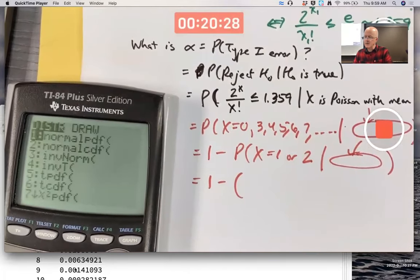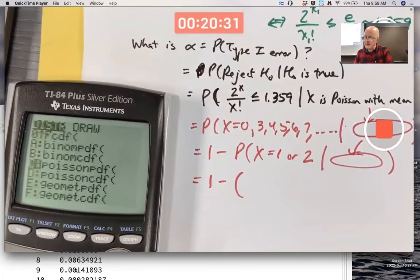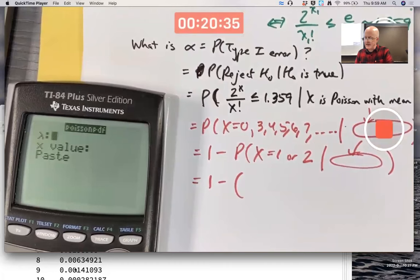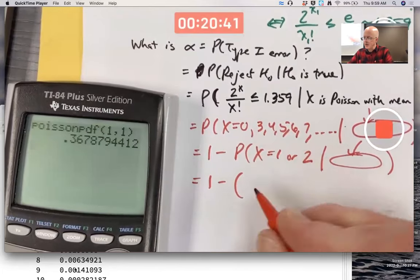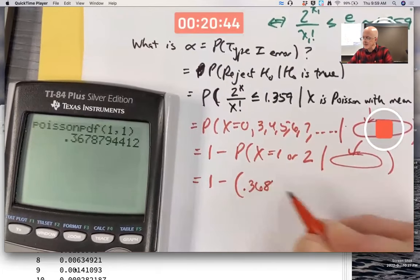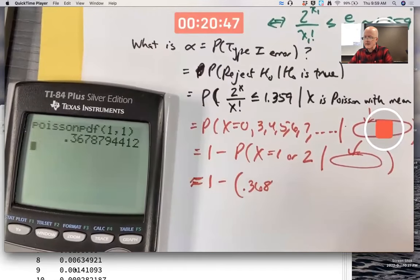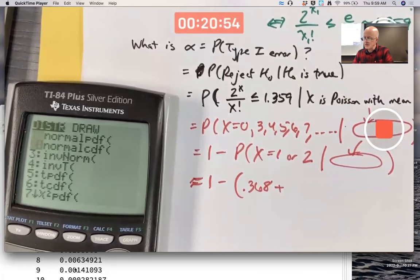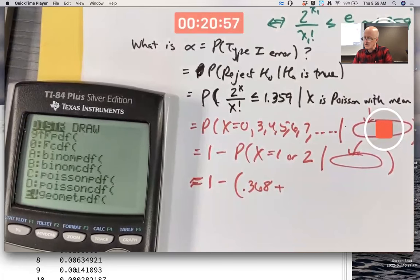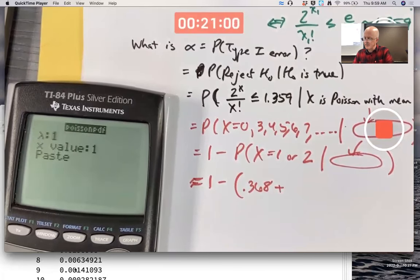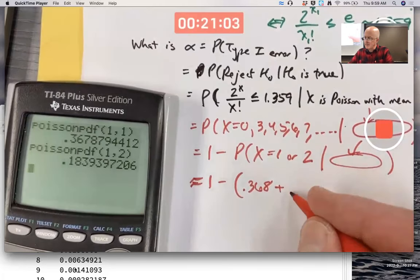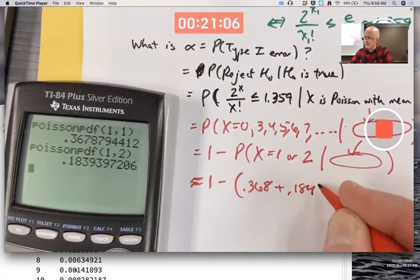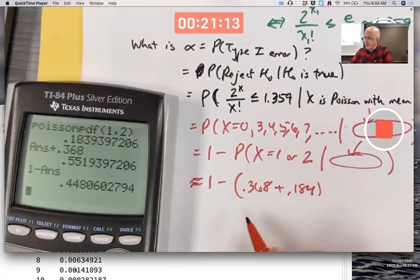Oh, and for variety, let's use the calculator. Go to your distributions menu. What's on PDF? Lambda is the mean. When x is 1, what's the probability of the PDF? It's 0.368 approximately. And when x is 2, it's about 0.184. So we get 0.448.